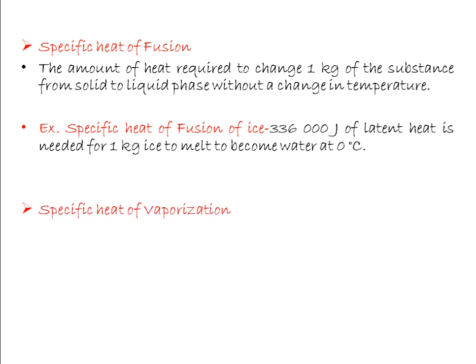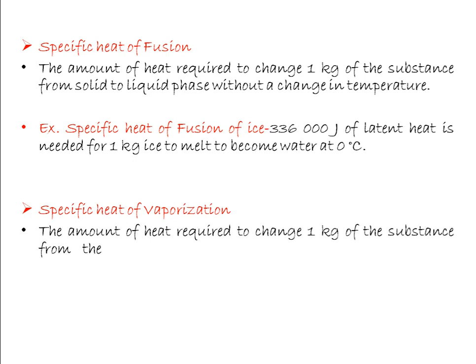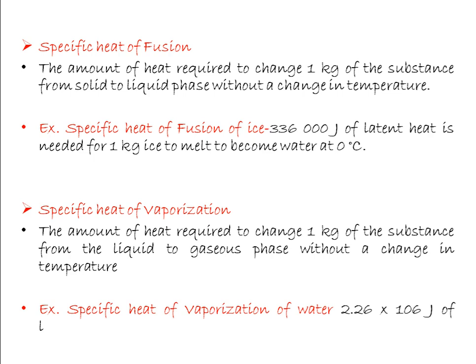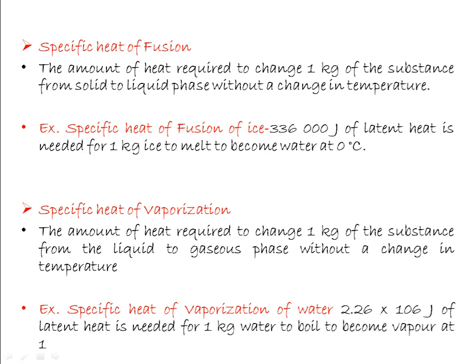The specific heat of vaporization is the amount of heat required to change 1 kg of substance from liquid to gaseous phase without change in temperature. The specific latent heat of vaporization of water is 2.26 × 10⁶ joules — this latent heat is needed for 1 kg of water to boil and become vapor at 100°C.